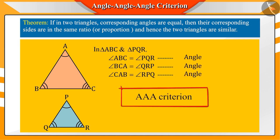This criteria of similarity of triangles is called the AAA criteria. Here, we can say that equiangular triangles are similar.